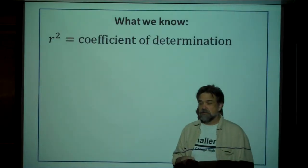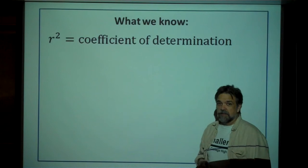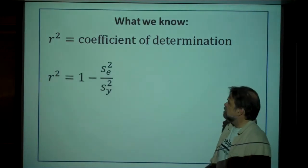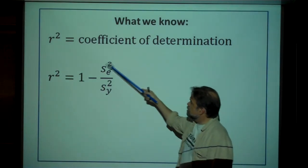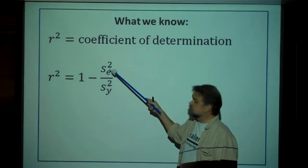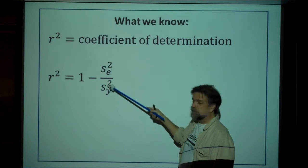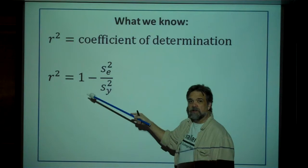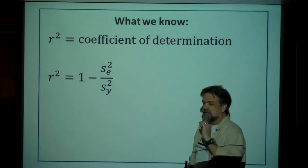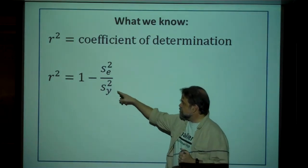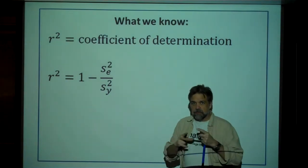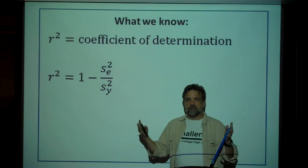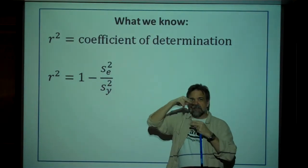R-squared, the coefficient of determination — one way to calculate it is just by taking r and squaring it. Another way is to take the variance of your residuals divided by the variance of your response variable, then subtract that fraction from one. Now let's look at what that actually means. Your y data — your response variable — has a variance; it's a measurement of how spread out and unpredictable it is.